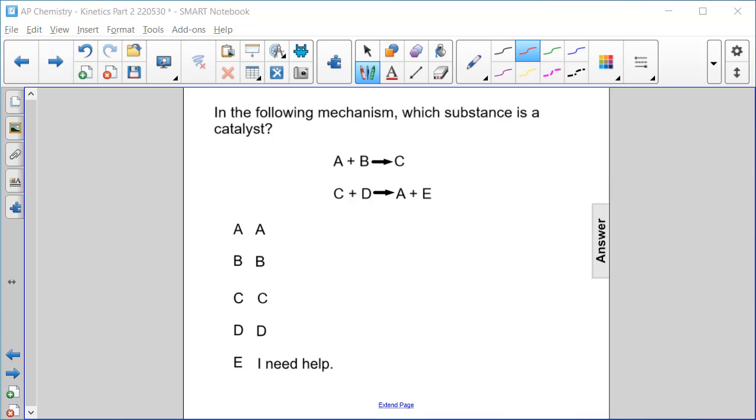In the following mechanism, which substance is a catalyst? So a catalyst has to first appear as a reactant, okay? But then it's used in one step and then produced in another step, right?